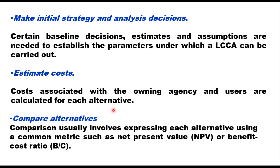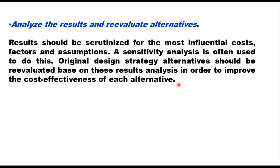The next step is to compare alternatives. Comparison usually involves evaluating each alternative using a common metric such as net present value or benefit cost ratio. Then analyze the results and re-evaluate alternatives. Results should be scrutinized for the most influential costs, factors and assumptions. A sensitivity analysis is often used to do this, in order to improve the cost effectiveness of each alternative.